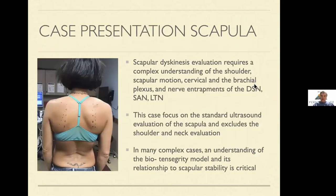In terms of scapular dyskinesis, it really does require a complex understanding of shoulder scapular motion, as well as an understanding of cervical and brachial plexus, and nerve entrapments of the dorsal scapula nerve, spinal accessory nerve, and long thoracic nerve — which we're not going to really cover today. We're just covering the main musculoskeletal portion of the scapula.